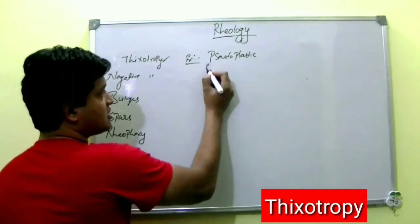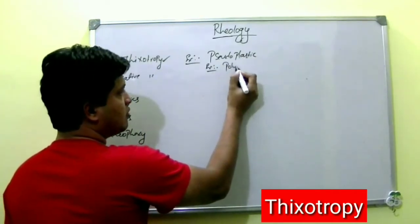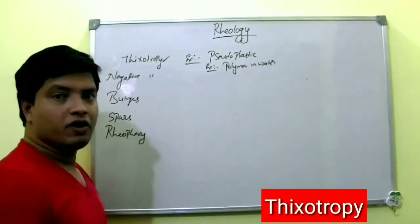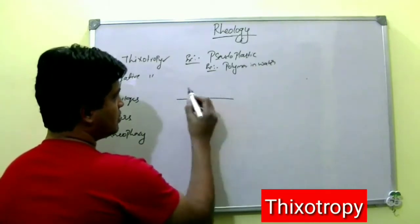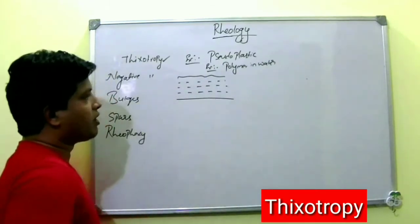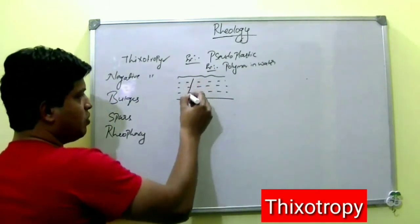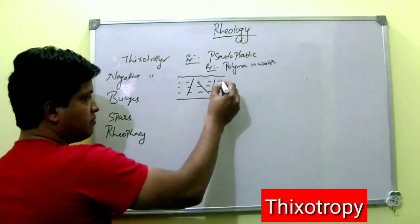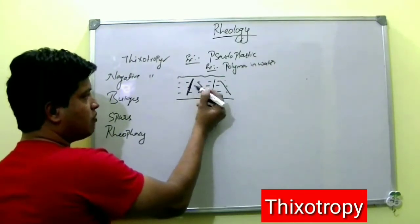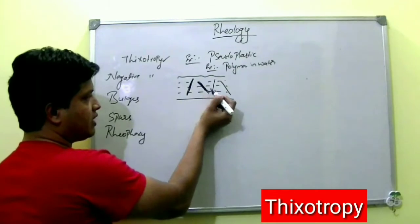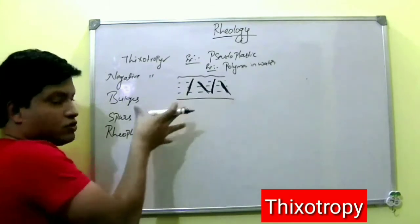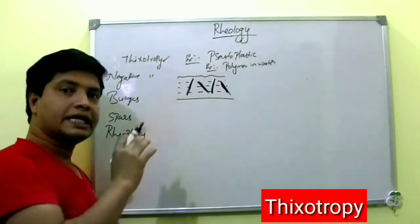What is the example under a pseudoplastic system? That is polymer in water. When you add polymer in water, assume water is flowing in imaginary layers. The polymer will go and sit between those layers and will get swollen — it will absorb water and swell.